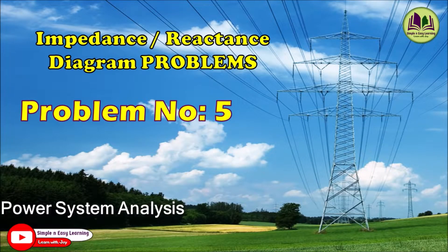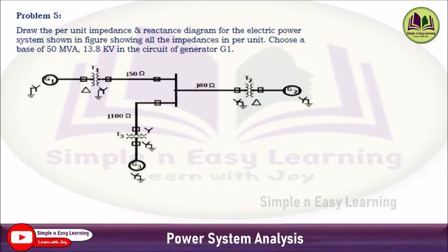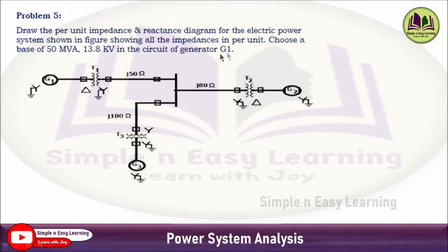Impedance reactance diagram problems, problem number 5. Draw the per unit impedance and reactance diagram for the electrical power system shown in the figure, showing all the impedances in per unit. Choose a base of 50 MVA, 13.8 kV in the circuit of generator G1. The base value is given and the single line diagram is given.